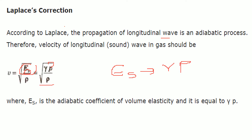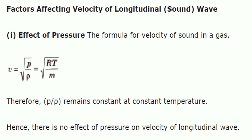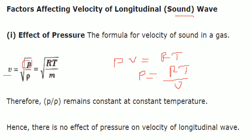The factors affecting the velocity of sound: first, the effect of pressure. The velocity formula is V = √(P/ρ). Using PV = RT for one mole, P can be written as RT/V, and substituting, P/ρ becomes RT/M. So P/ρ remains constant at constant temperature, meaning there is no effect of pressure on velocity of longitudinal waves.